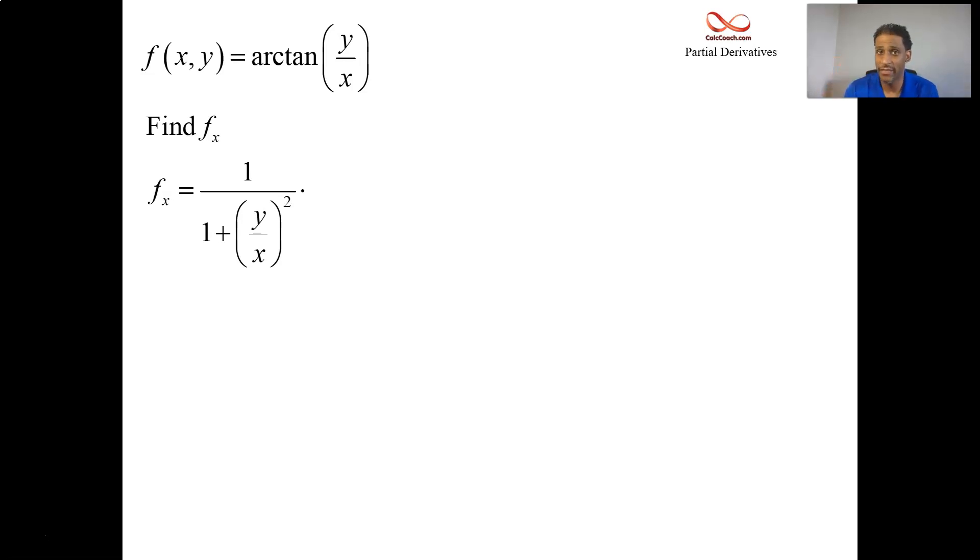Then the chain rule comes in and says we have to multiply by the derivative of the inside function. But it's with respect to x. You treat that y like you would treat a constant. Mentally, you should think about it as like 1/x. The derivative of 1/x is negative 1 over x².